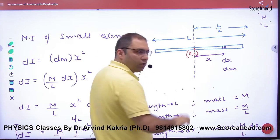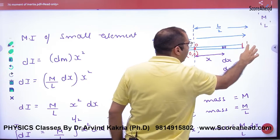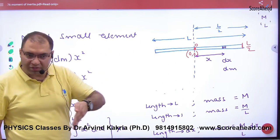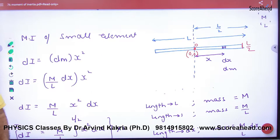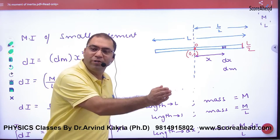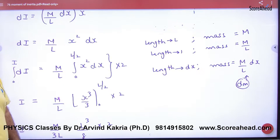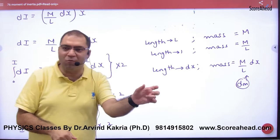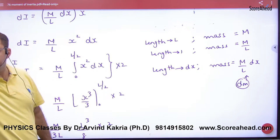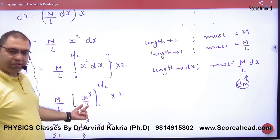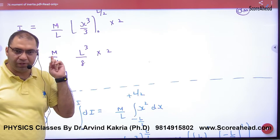So if the first element is at the center, x will be 0, and when the last element is at the end, the limit will be L by 2. By symmetry we multiply by 2 for both sides. Integrating x squared gives x cubed by 3. Putting in the limits and solving, we get the very important formula: ML squared by 12.